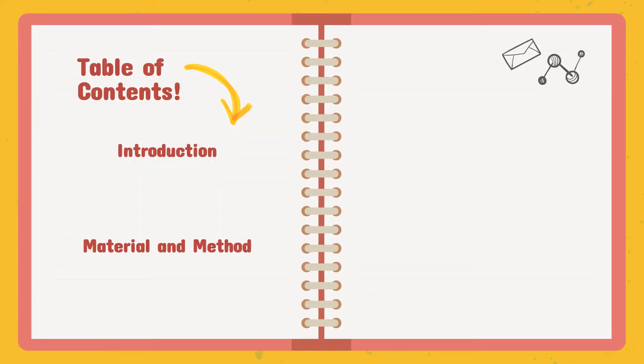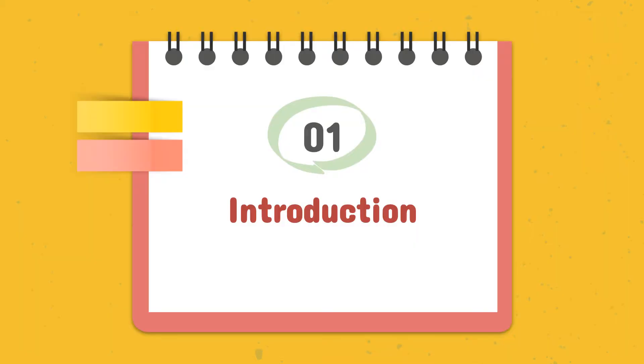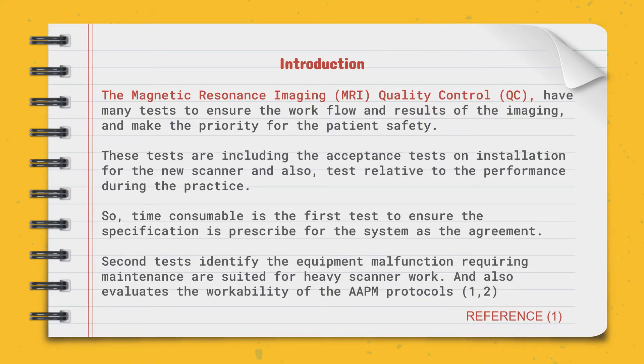The table of contents includes the introduction and the material and method. For quality control, we have many tests to ensure the workflow and result of the imaging and make patient safety a priority. These tests include the acceptance test on installation for a new scanner and relative tests for performance during practice. The first test ensures the specification is prescribed for the system as agreed. The second test identifies equipment malfunction requiring maintenance, suited for heavy scanner work.